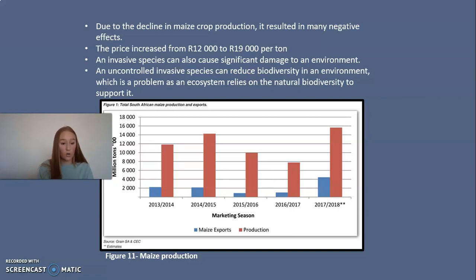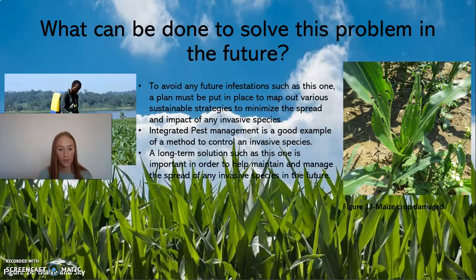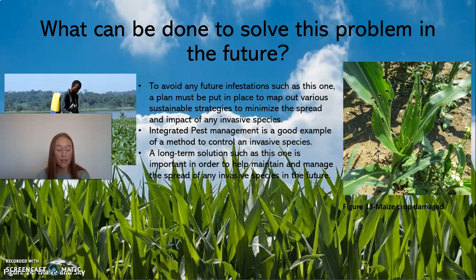An uncontrolled invasive species can reduce biodiversity in an environment, which is a problem as an ecosystem relies on natural biodiversity to support it. Based on evidence, it is clear that the fall army worm caused severe damage to farms all over South Africa, affecting income, food sustainability, and the economy.